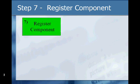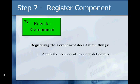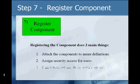Step 7: Register the component. You're going to take the component created in Step 6 and register it by doing three main things. Number 1, attach the component to a menu definition. Number 2, assign security access for users. Number 3, place navigational links in the registry. Once you've completed these three steps, you will have successfully registered your component, allowing the end user to see it out on the portal.